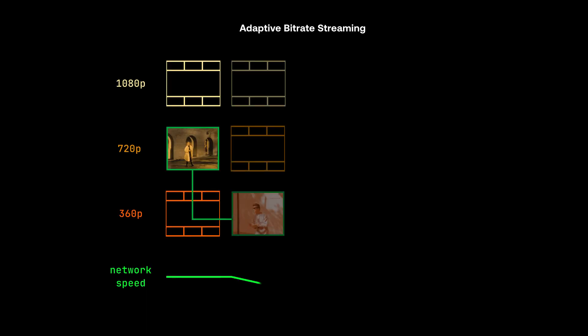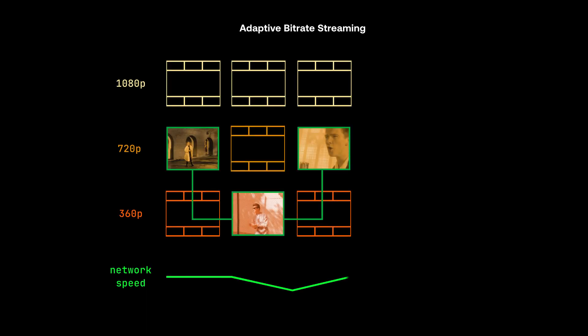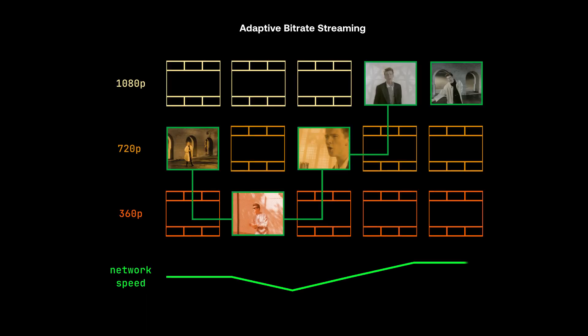Ever wonder when watching video on the internet, when it goes from really blurry to super high quality and then back down, how and why that happens? This is usually the result of a video implementing adaptive bitrate streaming, a technology that allows video quality to adjust automatically based on a viewer's network conditions so that playback is always seamless.